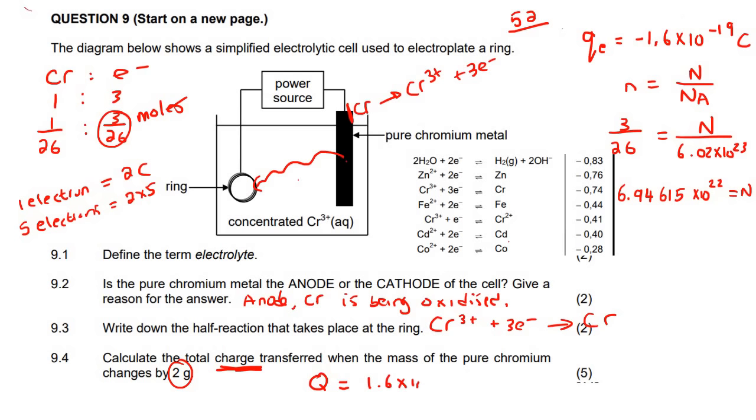So 1.6 × 10⁻¹⁹ multiplied by 6.94615 × 10²². And if we do that,